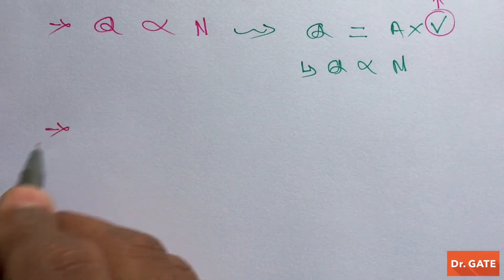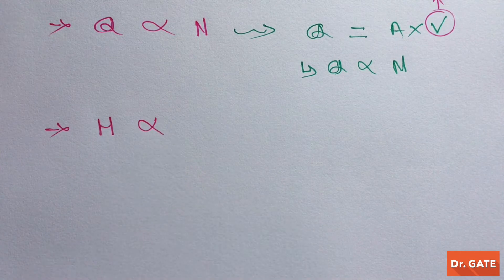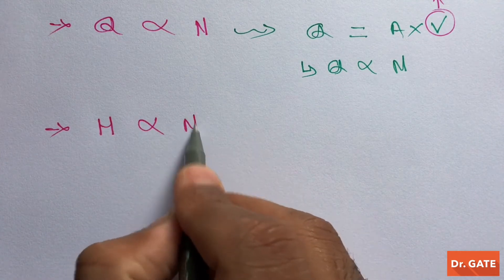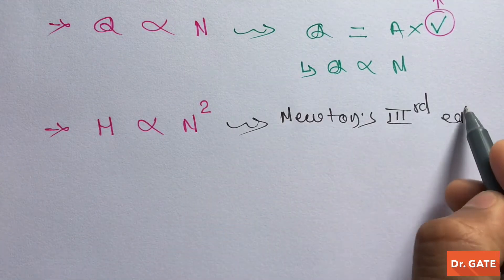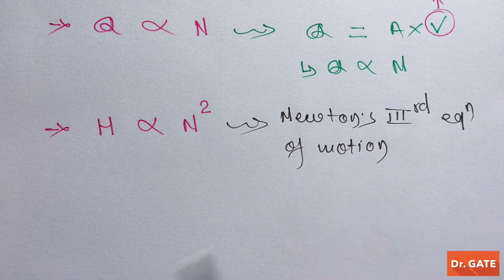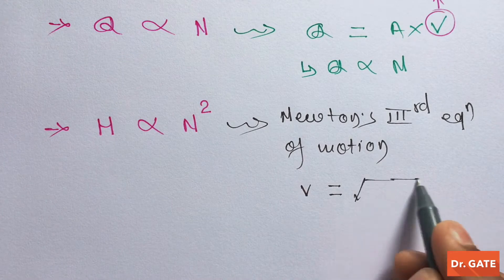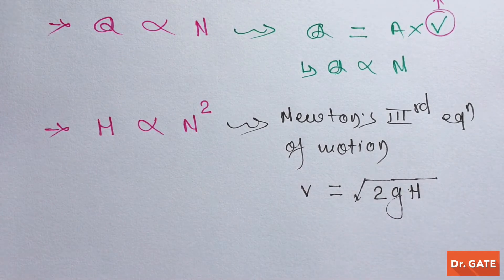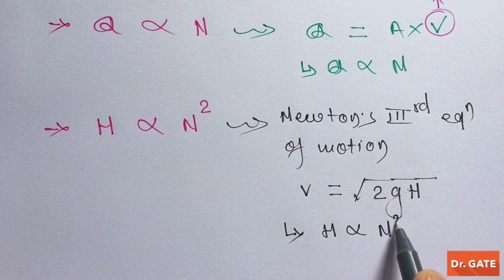Now, head is directly proportional to the square of rotational speed. From Newton's third equation of motion we know that velocity equals a certain expression, so from here we can get that head is directly proportional to the square of rotational speed.